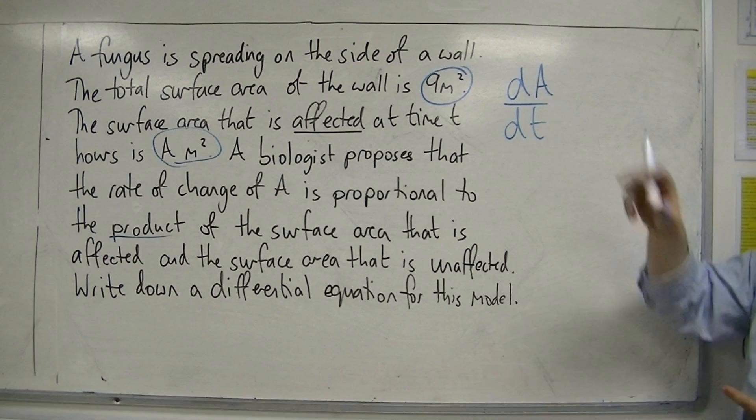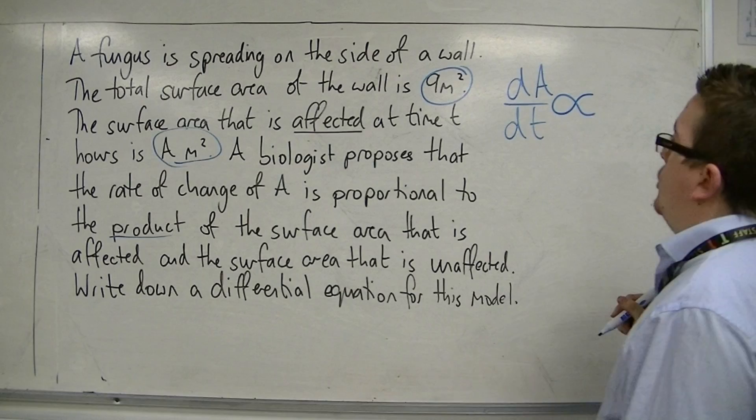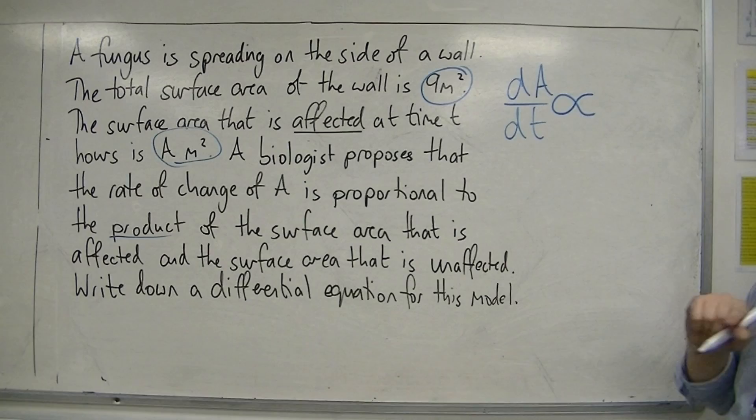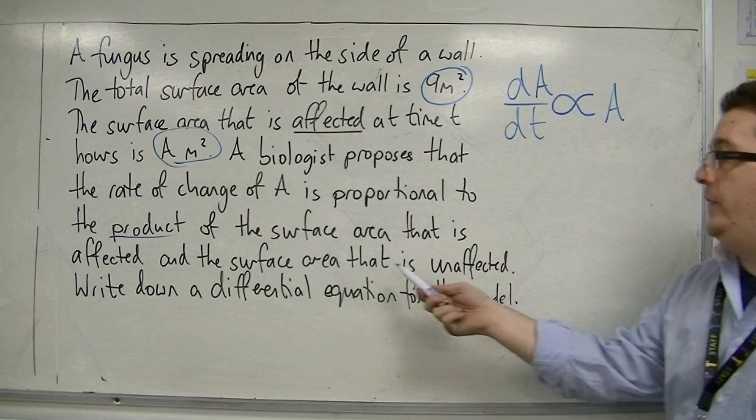Now we're told that that is proportional, so we use the proportionality symbol. That is proportional to the product of the surface area that is affected. Now the surface area that is affected was A. So it's the product of A and the surface area that is unaffected.